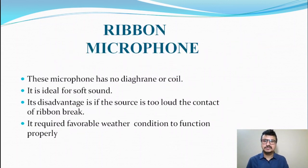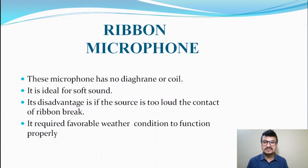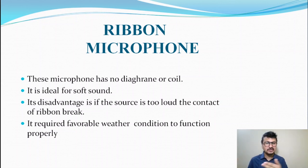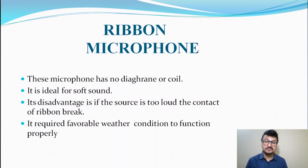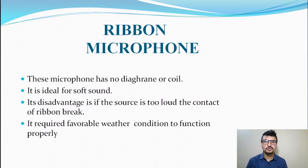The ribbon microphone has no diaphragm or coil. It is ideal for soft sound. Its disadvantage is that if the source is too loud, the contact of the ribbon breaks. It also requires favorable weather conditions to function properly.